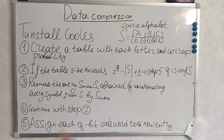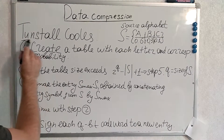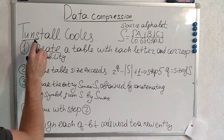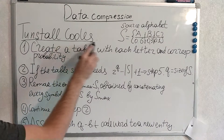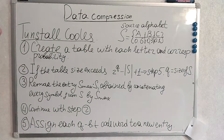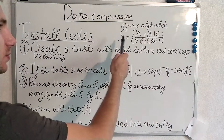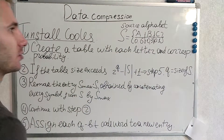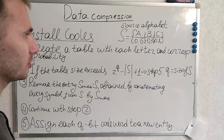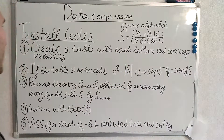Now we have Tunstall codes. Let's quickly recap what source alphabets are. Source alphabets are just symbols we have to encode and their probabilities.